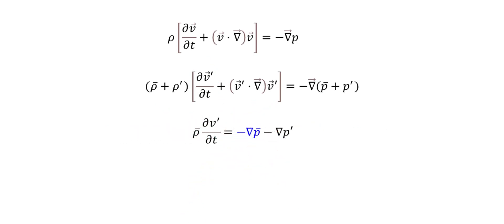Then the term shown in blue here is really the gradient of the mean pressure. And since we're defining the mean pressure as the mean over all space and time, this gradient is also zero. So this leaves us with a linearized Euler's equation.